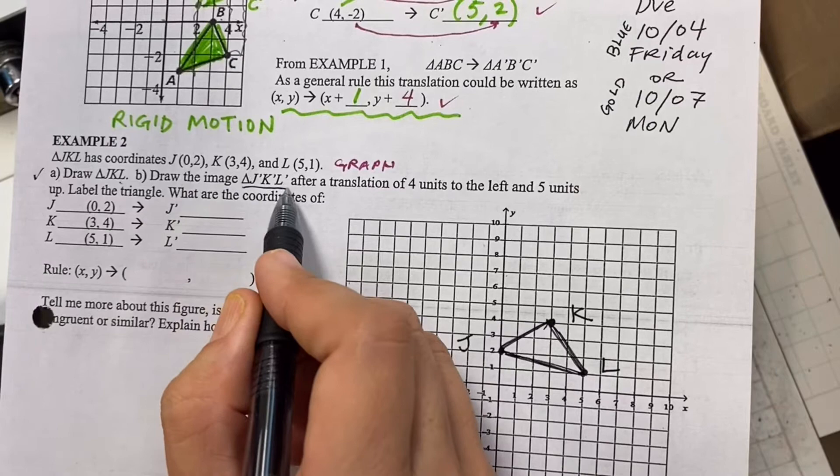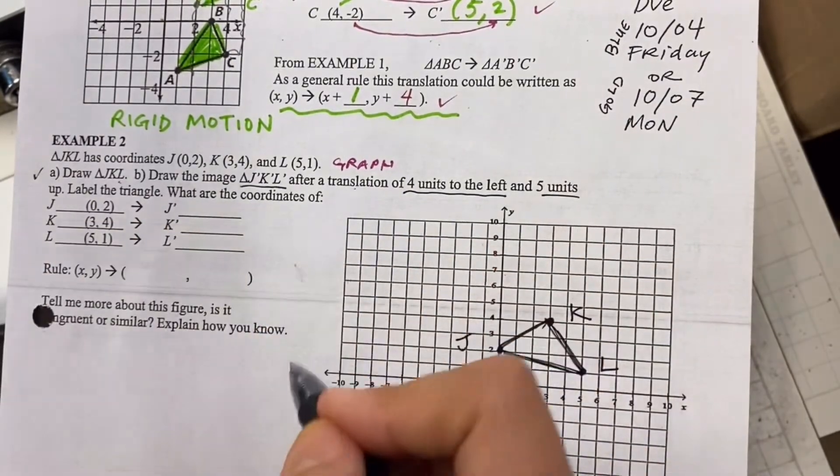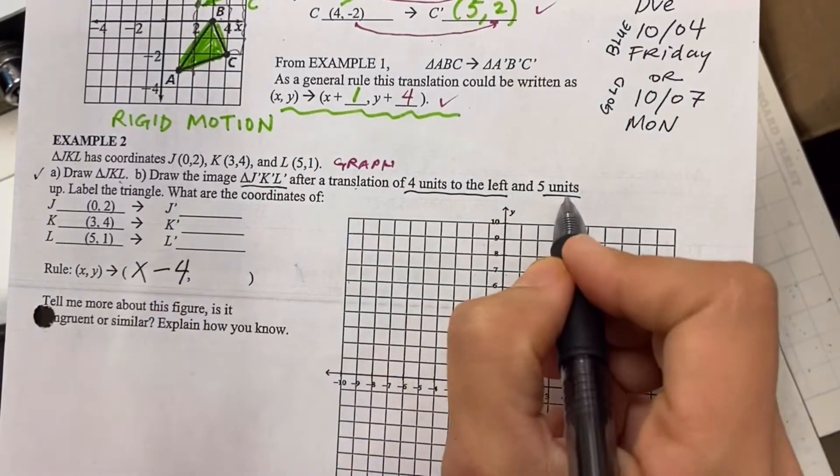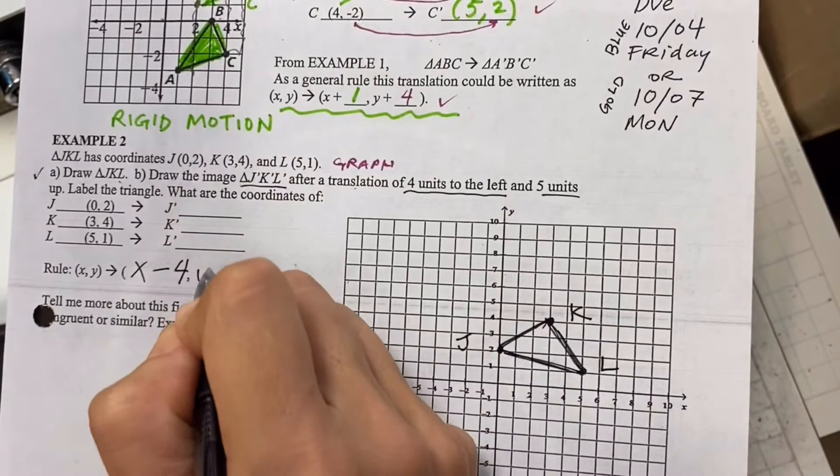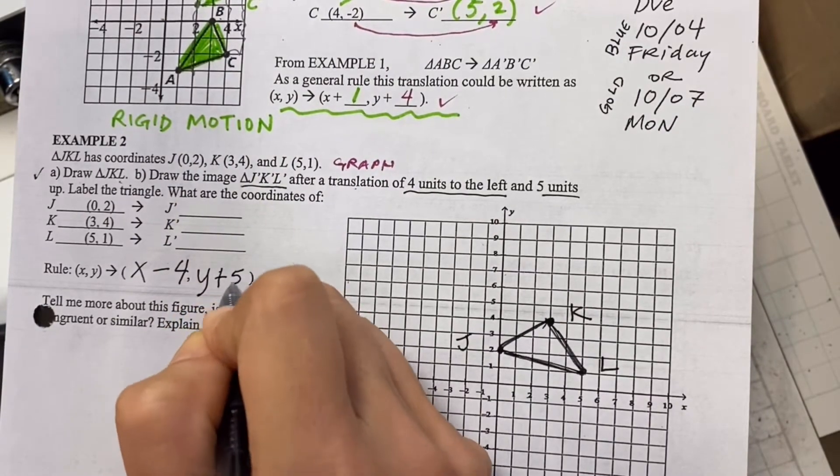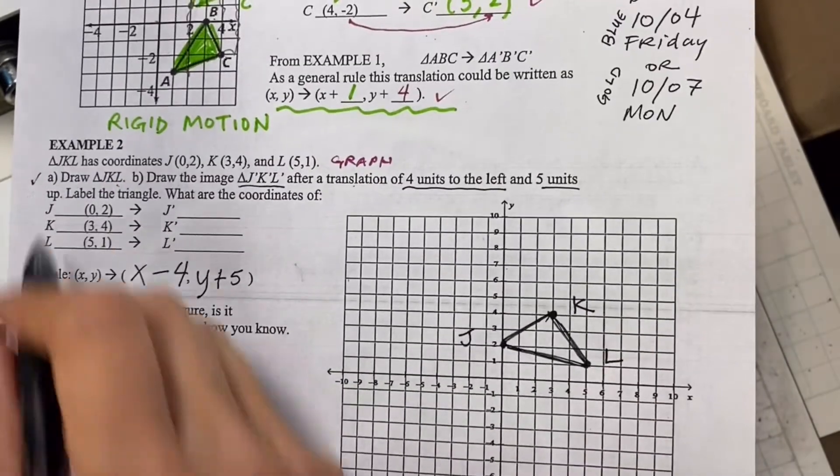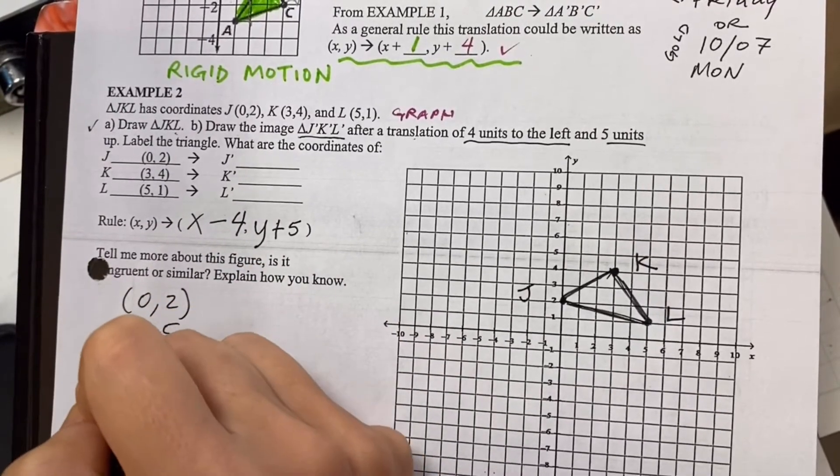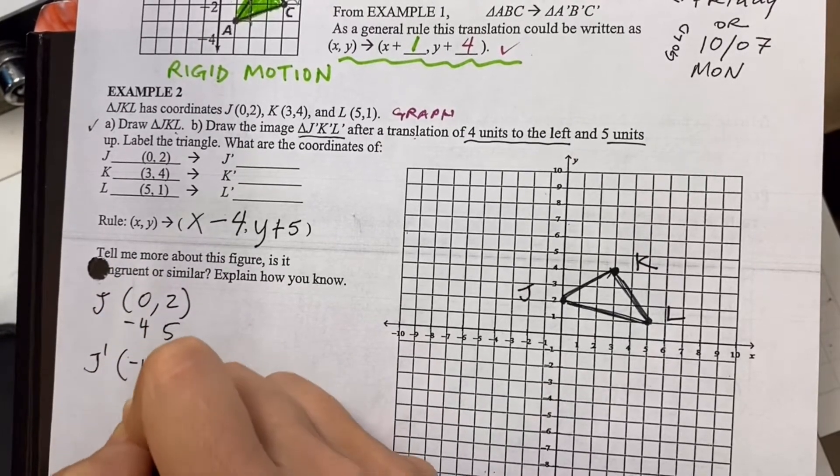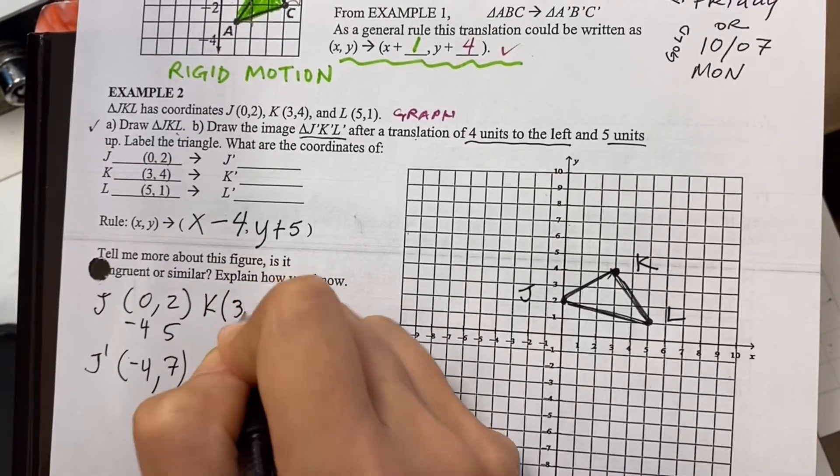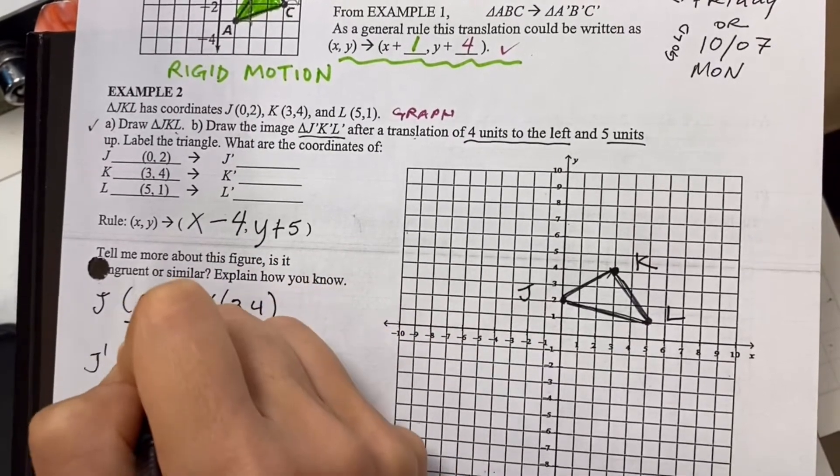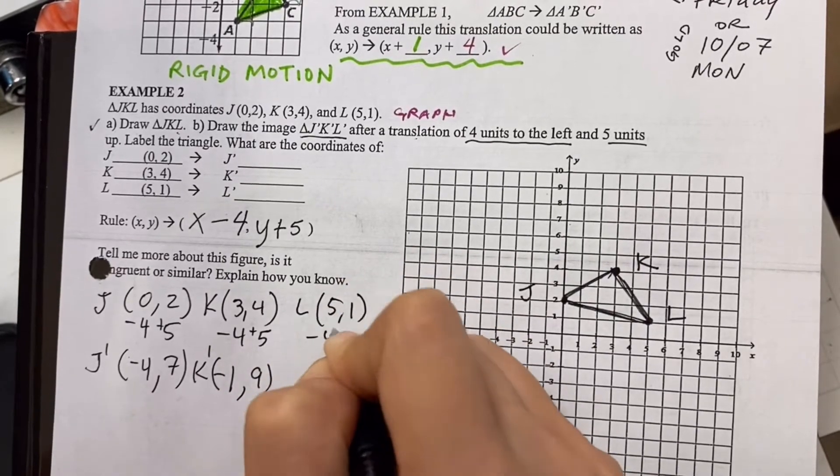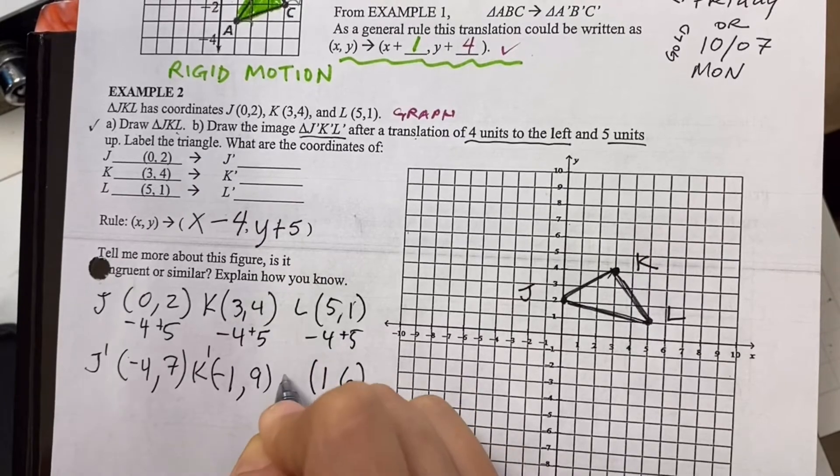Now, after we've drawn it, draw the image J prime, K prime, L prime after we translate it four to the left and five up. So if to the right was to add four, to the left must mean to subtract four. Five up. So we had four up a minute ago, so five up, we should add five to the Y. So let's line up our math here. Zero, two, we want to subtract four and add five. That'd be seven. K was three, four, we want to subtract four, add five. And L, let's subtract four and add five.